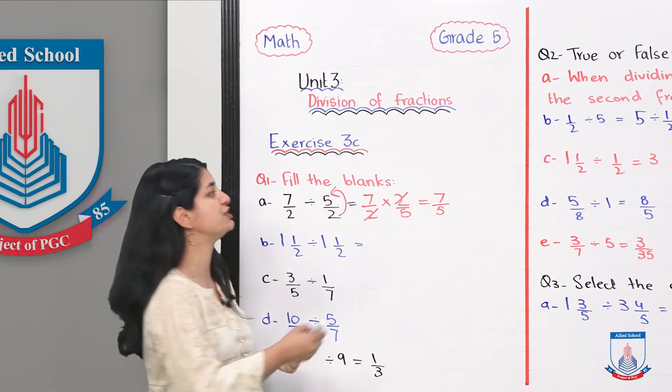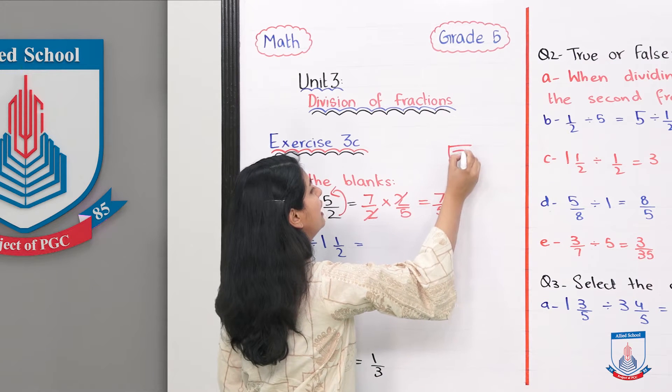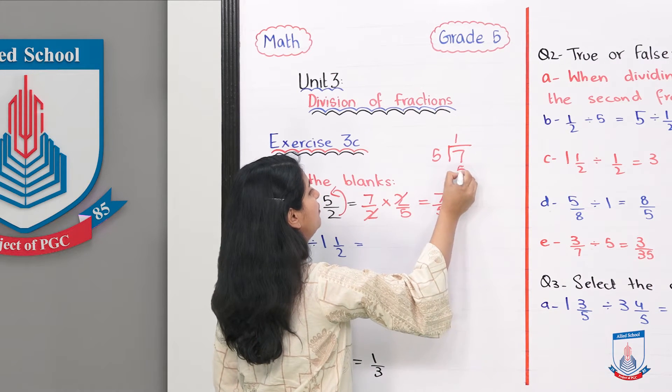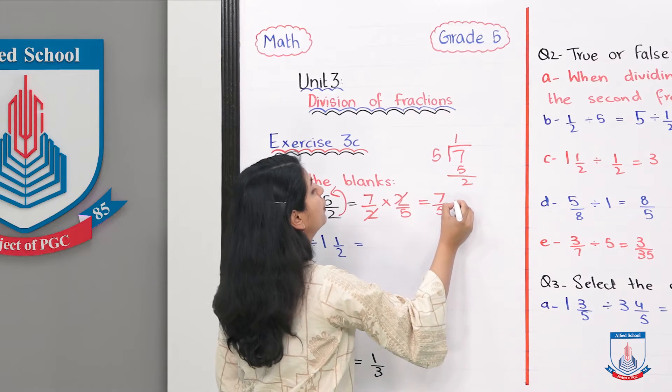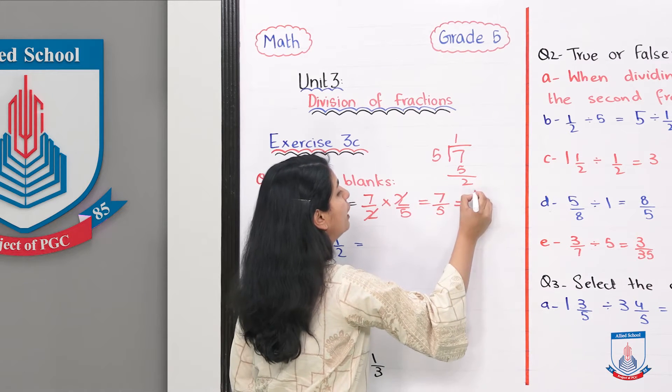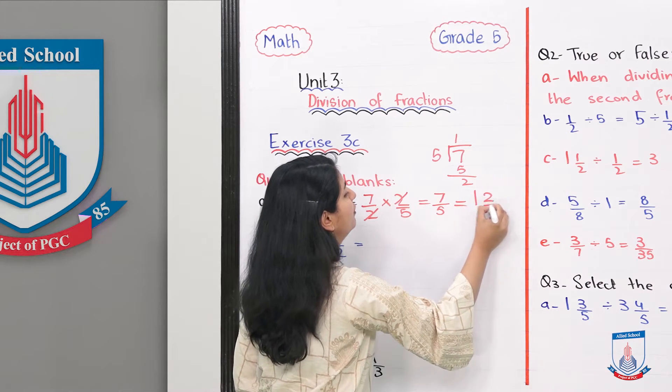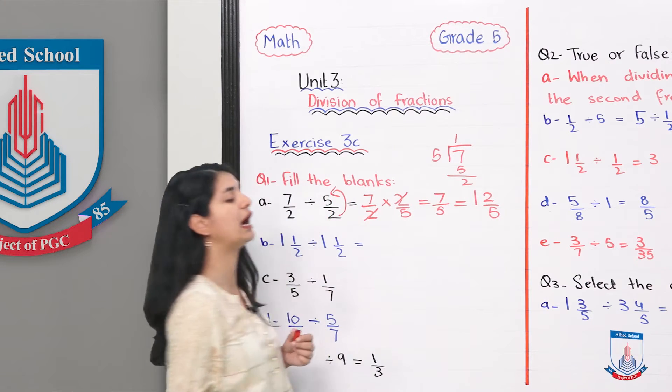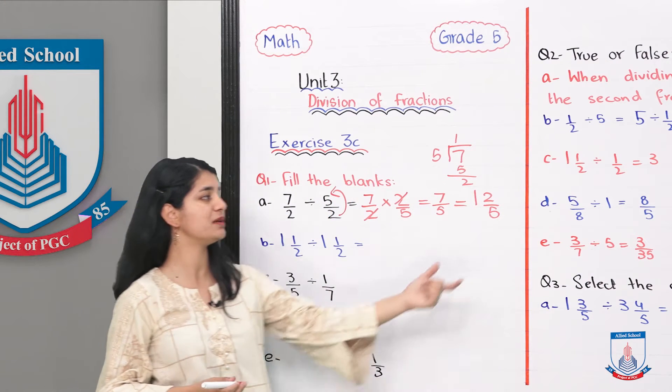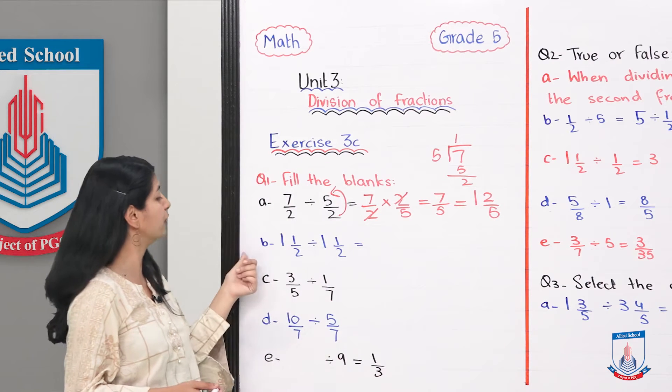We divide. When we divide, 5 times 1 is 5 with 2 remaining, so our answer will be 1 whole 2 by 5. This is your answer for the first blank.